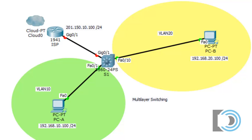This demonstration is on multi-layer switching done in Packet Tracer. In the CCNA we mostly deal with layer 2 switching where we configure VLANs on layer 2 switches, and if we want to communicate between those VLANs we need a layer 3 device like a router. But with multi-layer switching, all you need is a layer 3 switch like a 3560 switch, which can handle all of the switching duties, the VLANs, and also do routing. Let's see how it works.